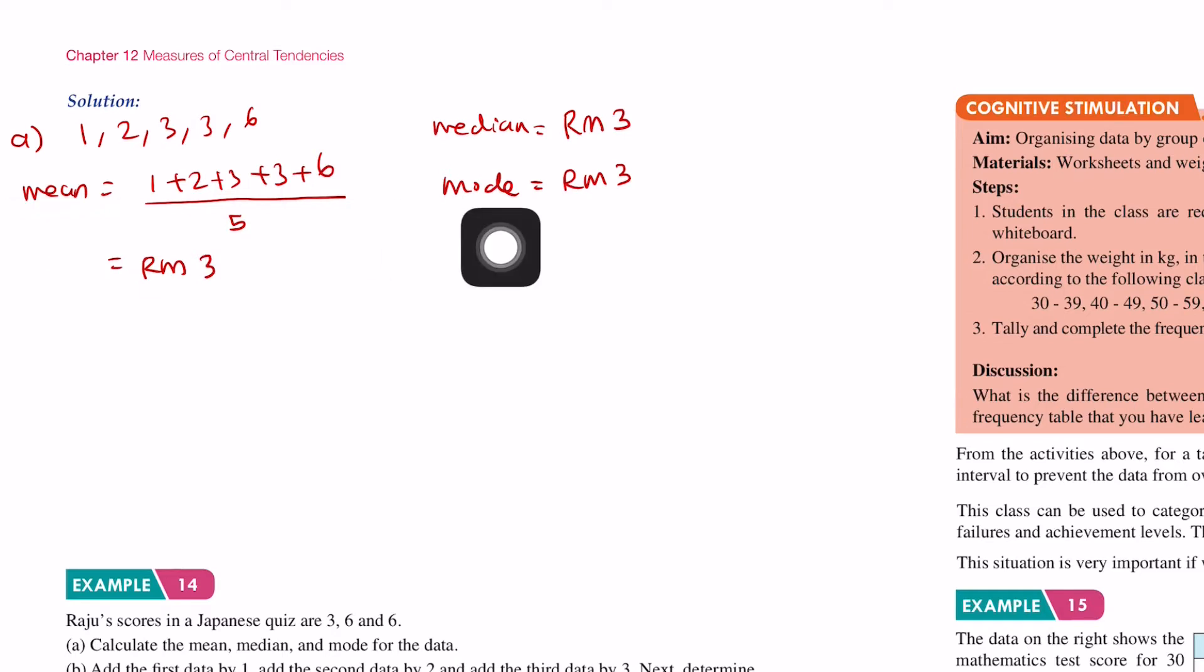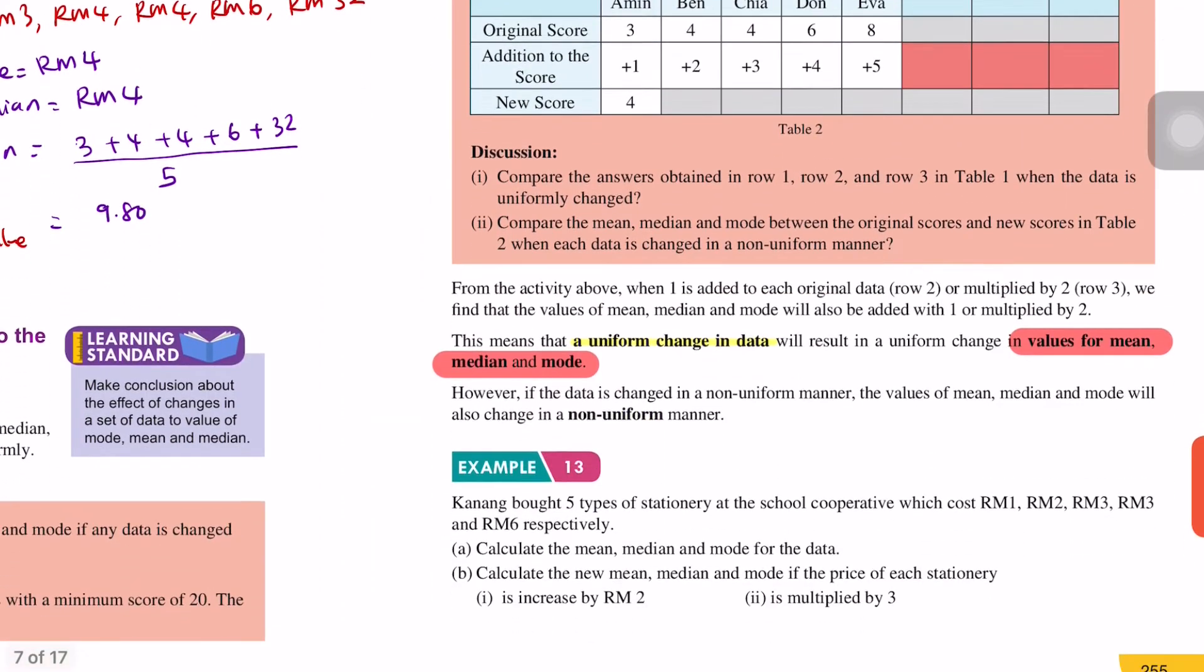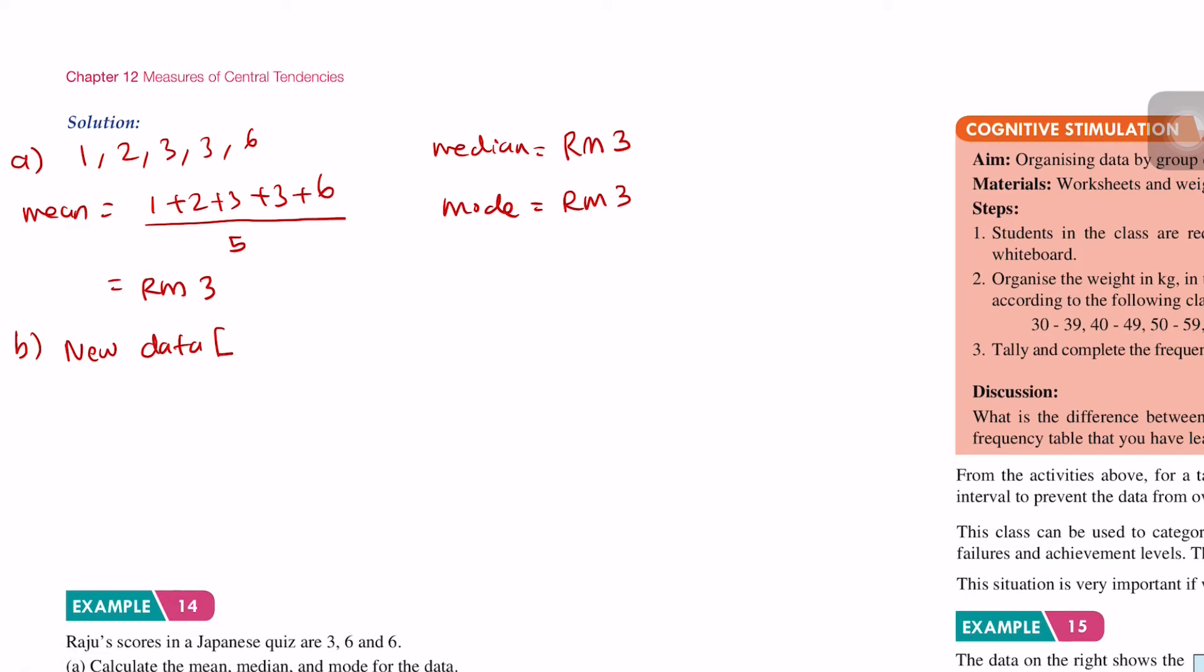For new data increased by RM2: we get 3, 4, 5, 5, 8. The mean is 3 plus 4 plus 5 plus 5 plus 8 divided by 5, equals RM5. The median is RM5, and the mode is RM5.